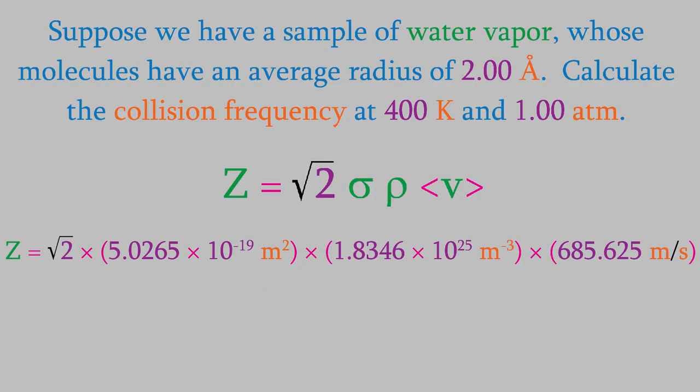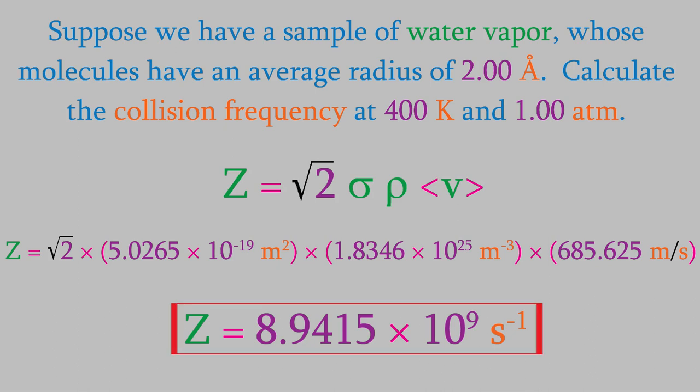So, now we have all the data we need to calculate the collision frequency. When we do, we get a result of 8.9415 times 10 to the 9th. And what about the units? It turns out that all the units cancel out except for seconds in the denominator, so the unit is seconds to the minus one. In other words, there are about 8.94 billion collisions per second. That's a lot of collisions happening in a very short time.